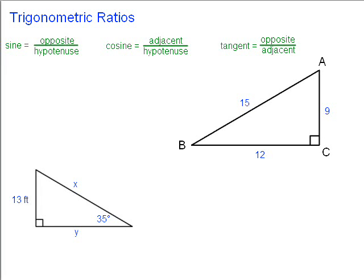Let's take a look at trigonometric ratios. Specifically, we're going to look at sine, cosine, and tangent. First of all, we should know the definitions of each of those.